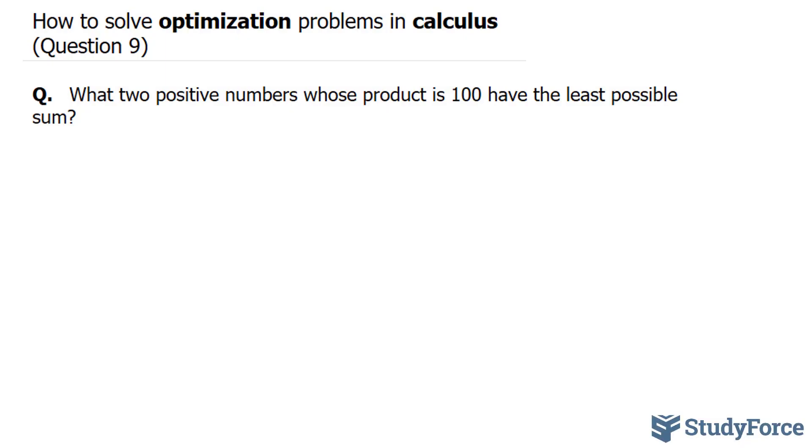The hard part when it comes to optimization problems is coming up with an equation that works. We have two positive numbers, we don't know what they are, I'll call the first positive number A and the second positive number B. We're told that these two positive numbers have a product of 100, meaning that if we multiply them together, A times B, we end up with 100.